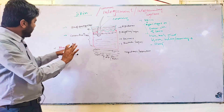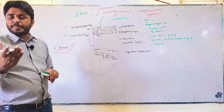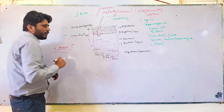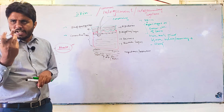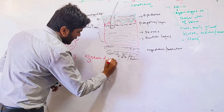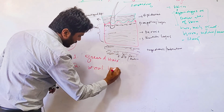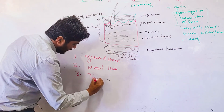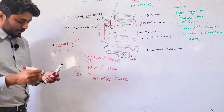Skin has derivatives; derivative number one is hair. Animals have three different kinds of hairs. One is known as guard hairs, another is known as wool hairs, and the third one is known as tactile hairs.